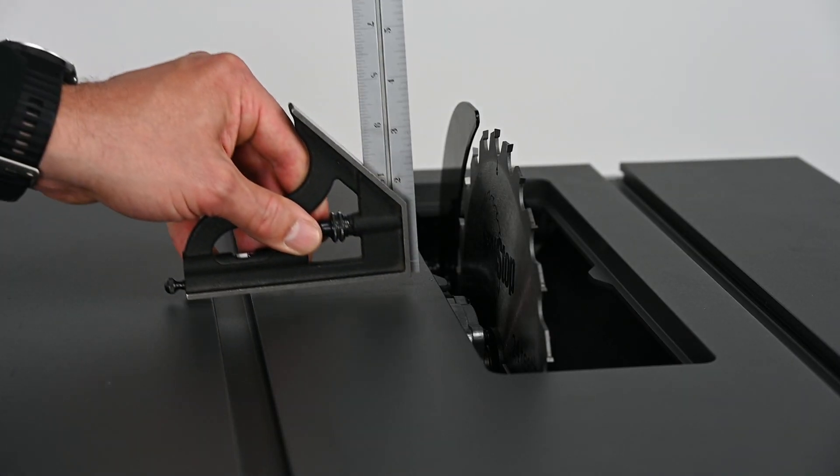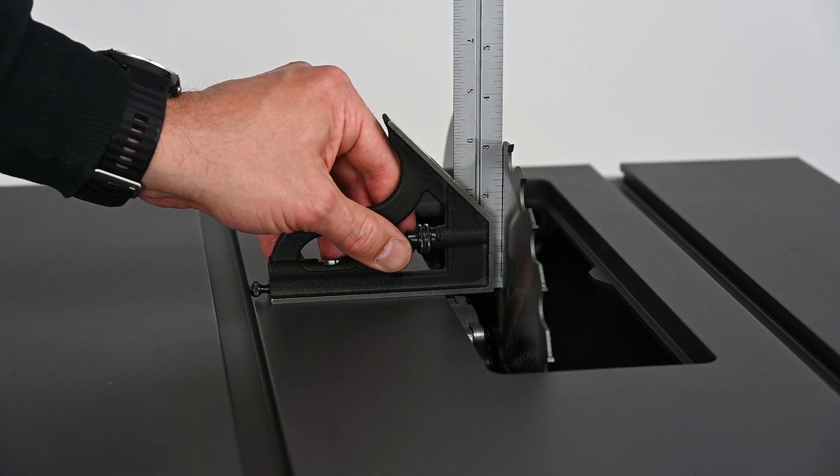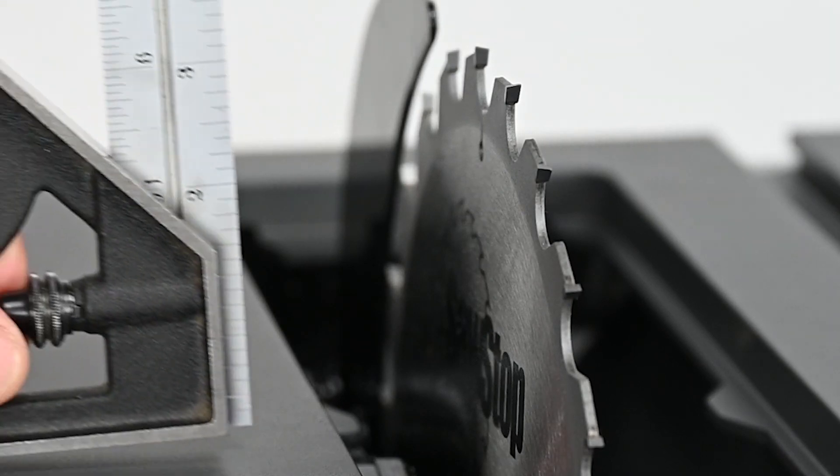Place a square against the blade body and the table top. If the blade body is not flush with the square,